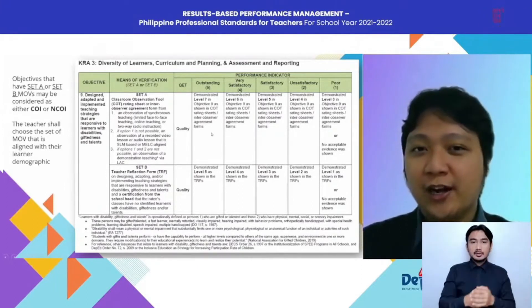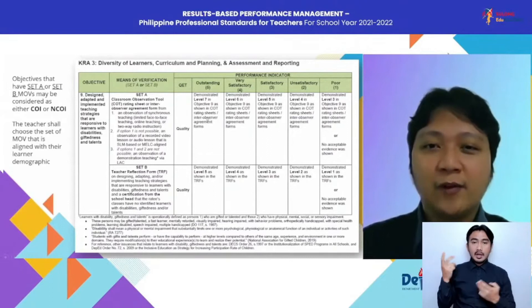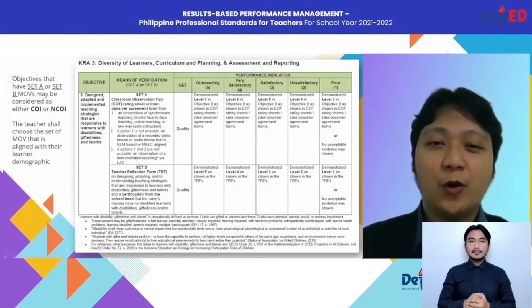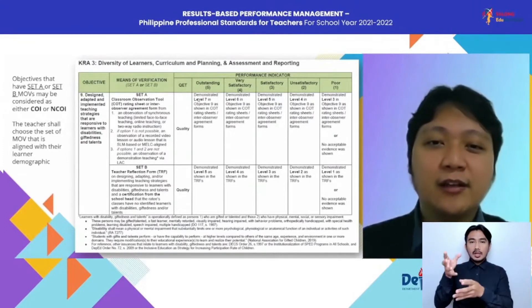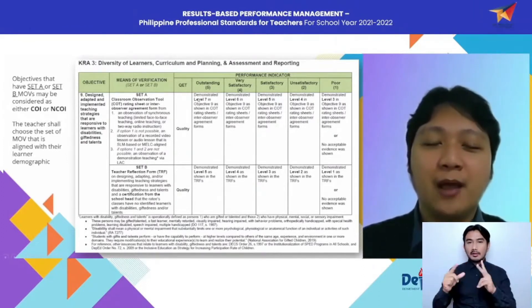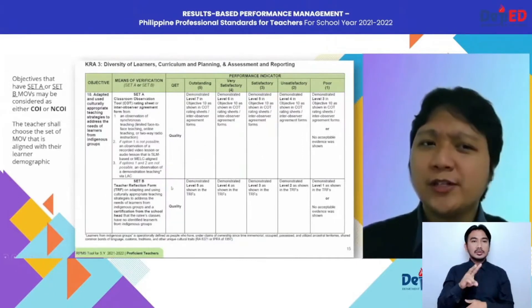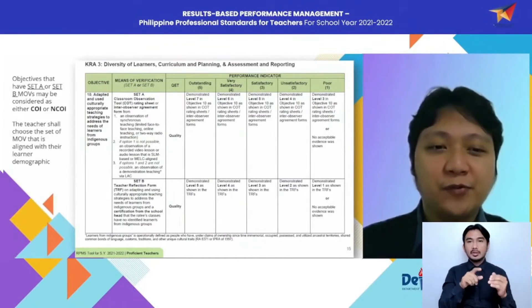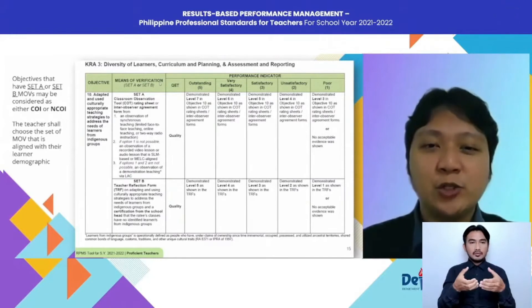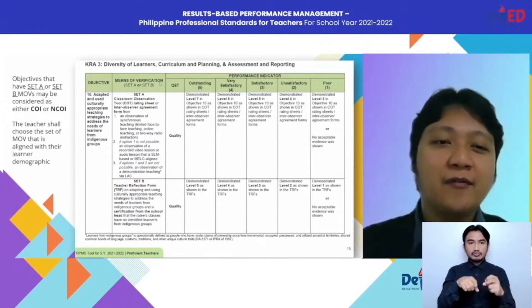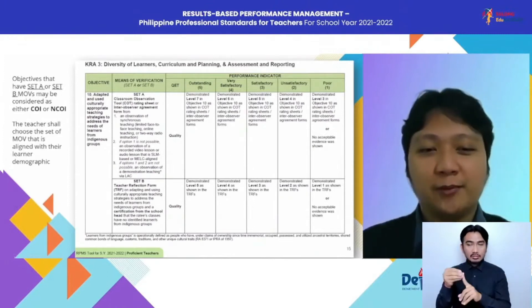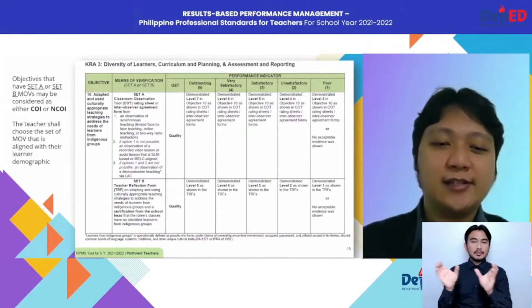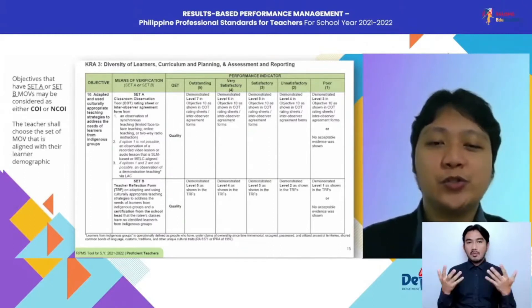The performance indicators expected for each rating: level five for outstanding, level four for VS, level three for satisfactory, and so on. To understand what those levels mean, please refer to the documents in the Google Drive link indicated in DepEd Memo 4 Series of 2022. The same logic applies to Objective 10: adapted and used culturally appropriate teaching strategies to address the needs of learners from indigenous groups. If you can display that through classroom observation, choose Set A. But if you have no learners from indigenous groups, refer to Set B or the TRF, complemented by a certification from the school head.